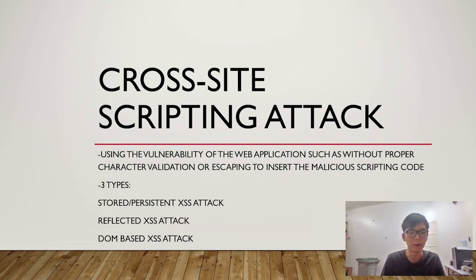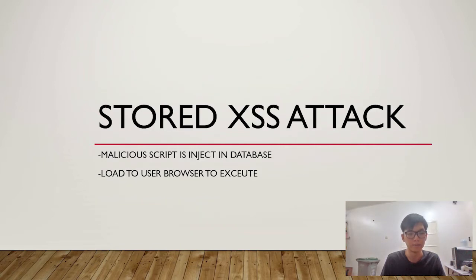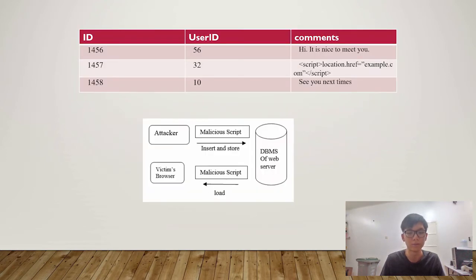There are three types of XSS attack. The first is Stored XSS: the malicious script is injected directly into the database by bypassing the authentication system or validation system. The target is to load the malicious script into the user's browser to execute. Here is an example of a simple database table with columns: ID, user ID, and comment.